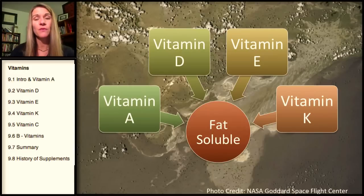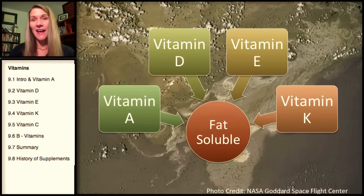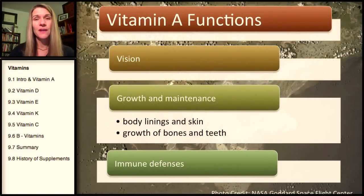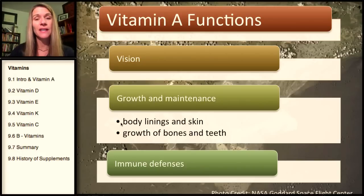We're going to start with the fat-soluble vitamins, beginning with vitamin A. Vitamin A, D, E, and K are our fat-soluble vitamins. The functions of vitamin A include functioning with vision, with growth and maintenance — basically helping with replacing the body linings such as the skin. It assists with both growth of bones and even teeth, and it does help with immunity.